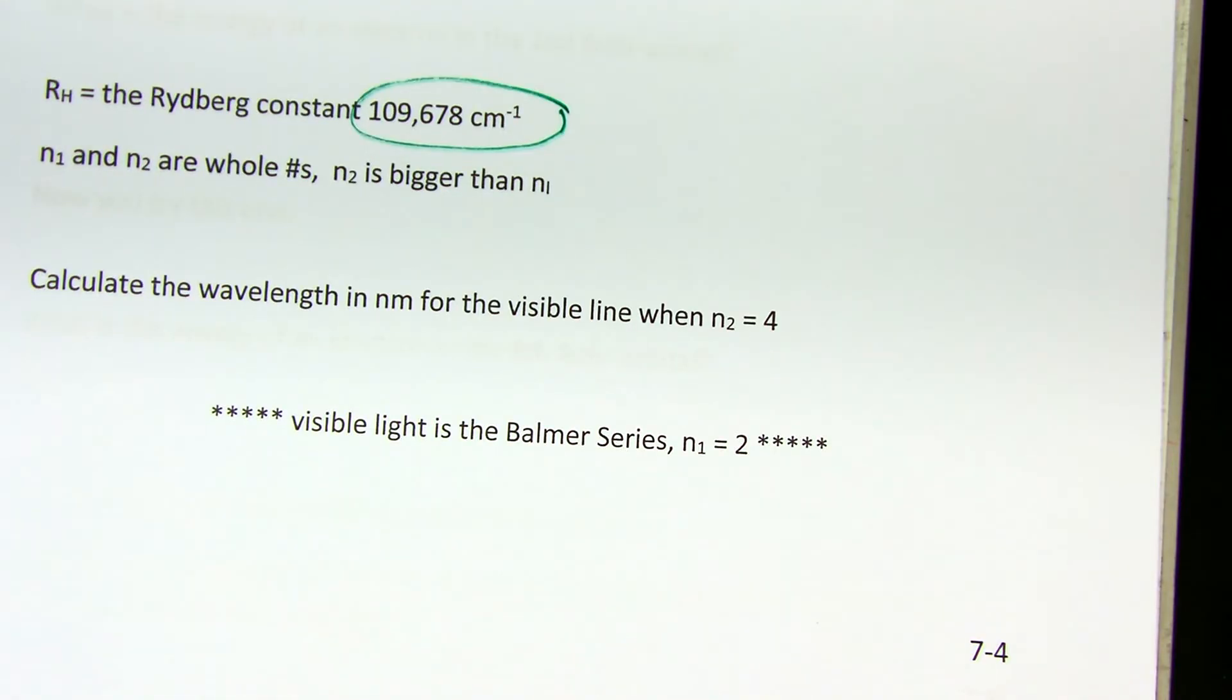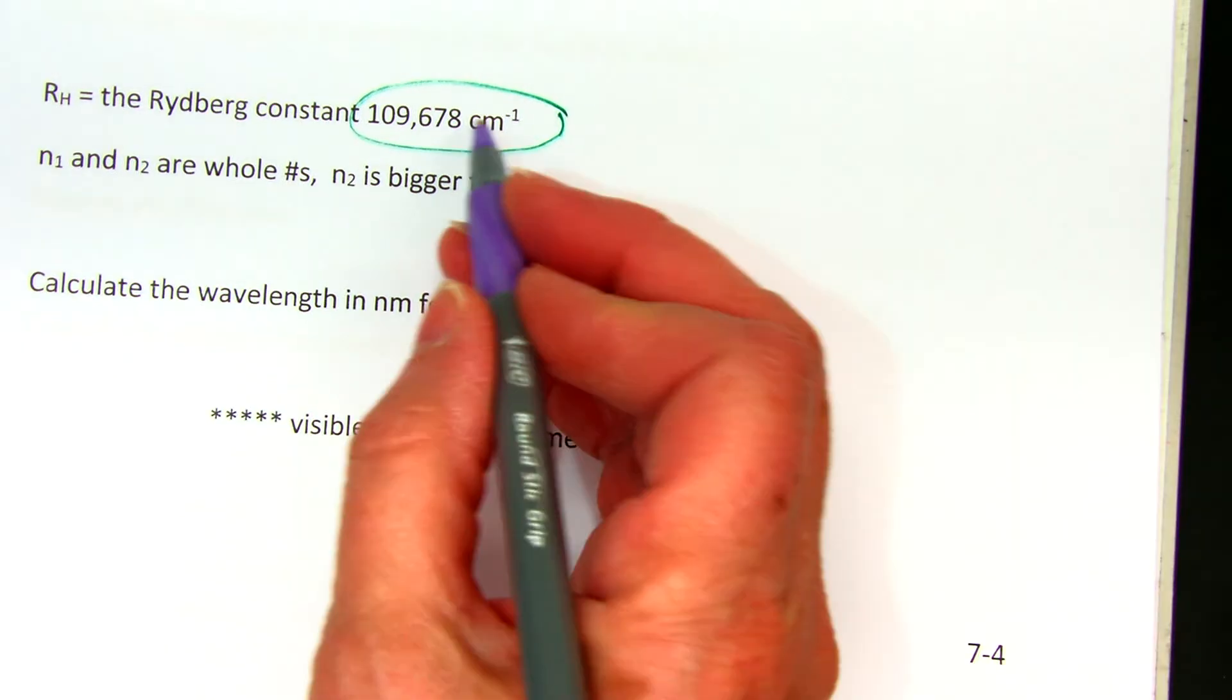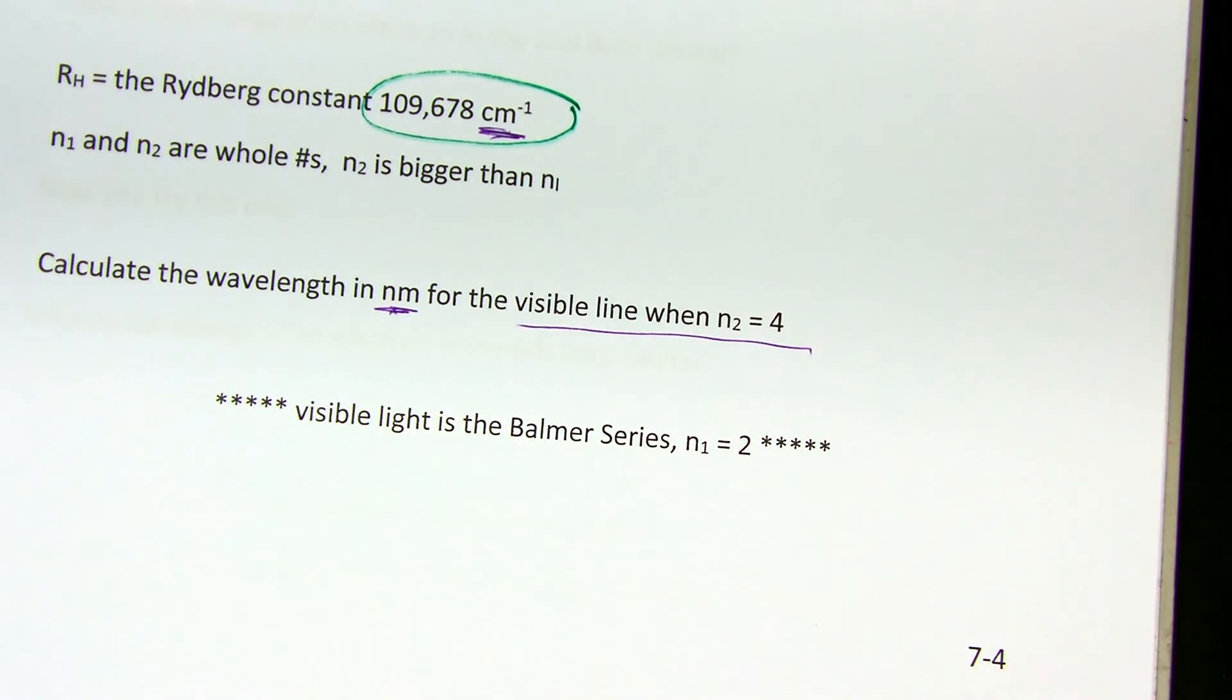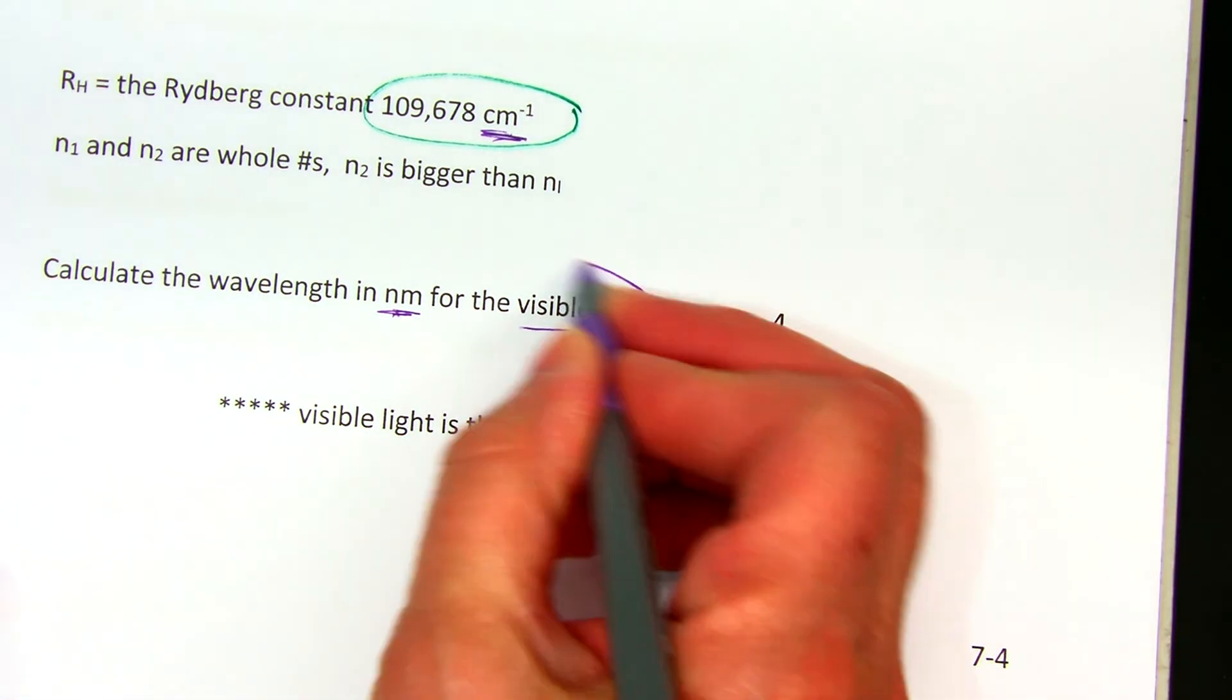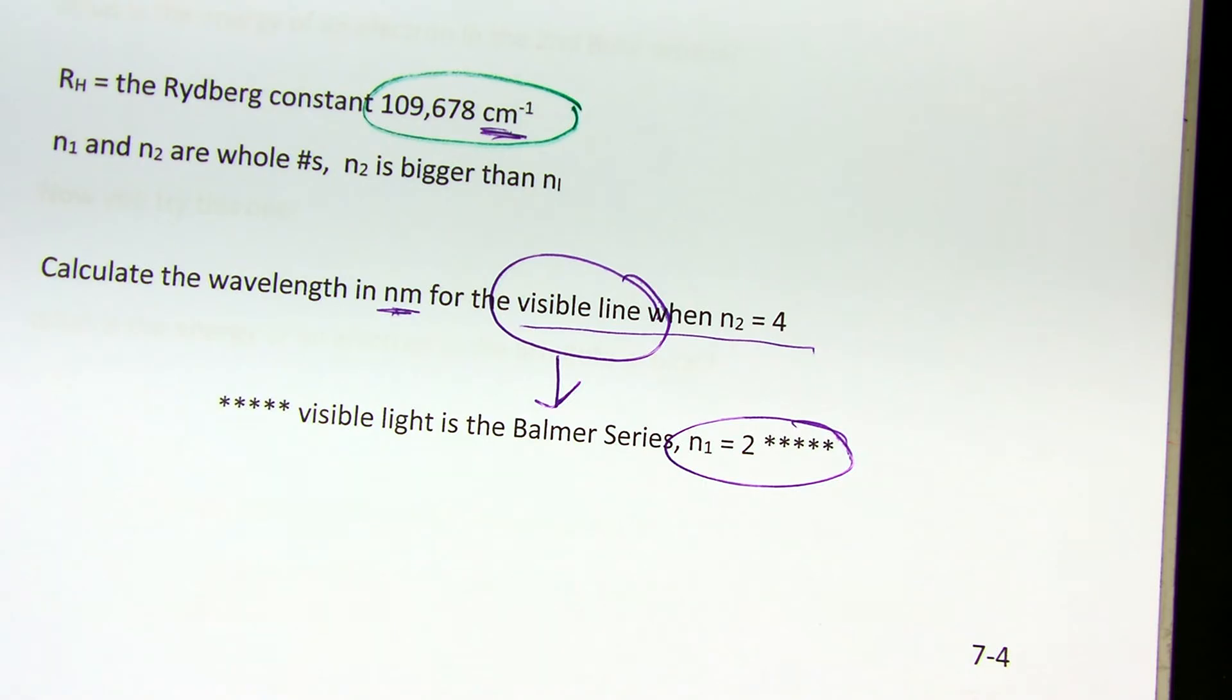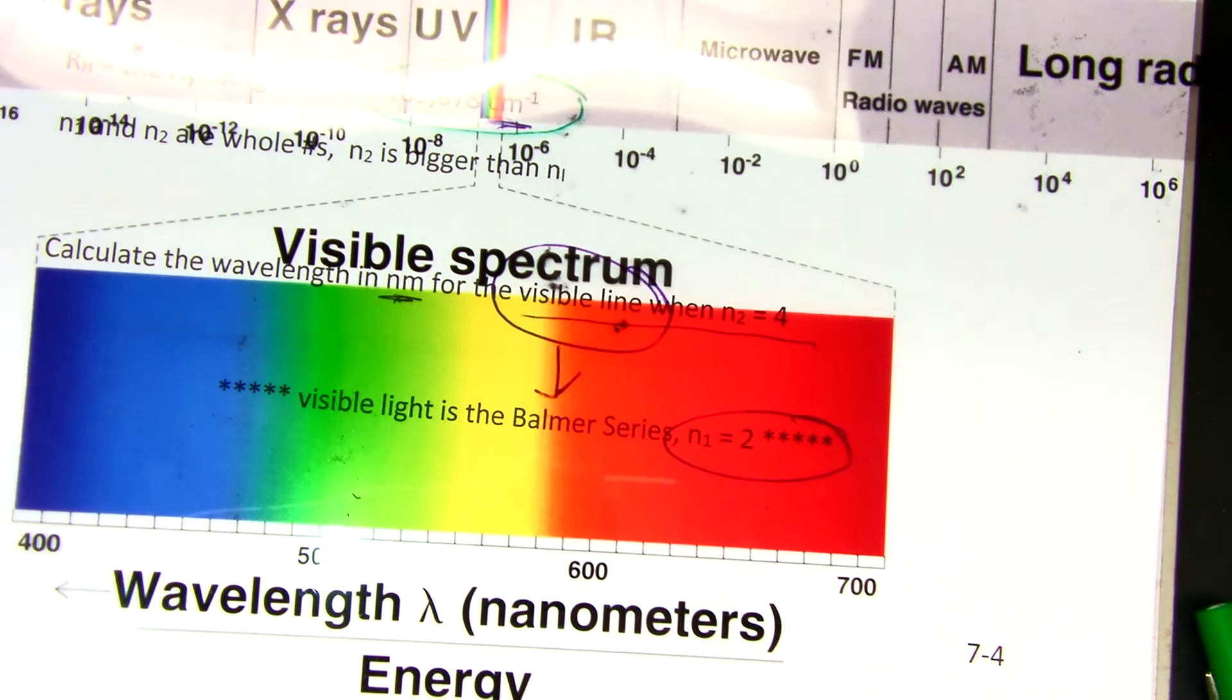Let's look at how we use this. Calculate the wavelength in nanometers for the visible line where n2 is equal to 4. On a scale of 1 to 10 of difficulty, this problem is probably about a 4 because it requires you to change your units from centimeters to nanometers. It says visible line where n2 is 4. When you first read this problem, the first thing that pops in my head is what's n1? n1 was not written out except that it was right here, because it said visible. The visible lines are the Balmer series, so n1 is equal to 2.